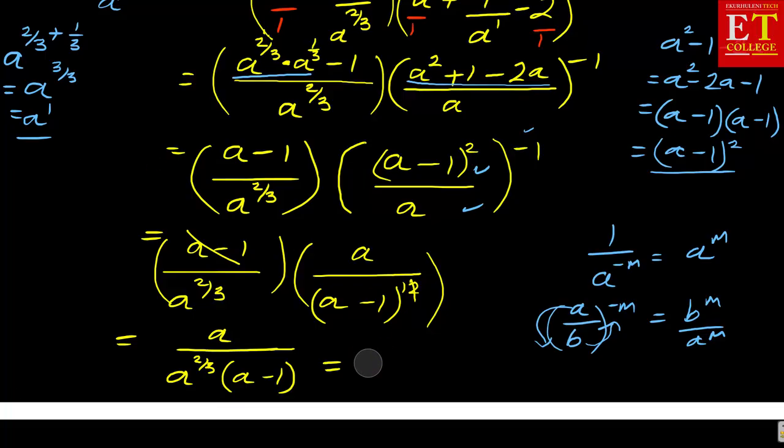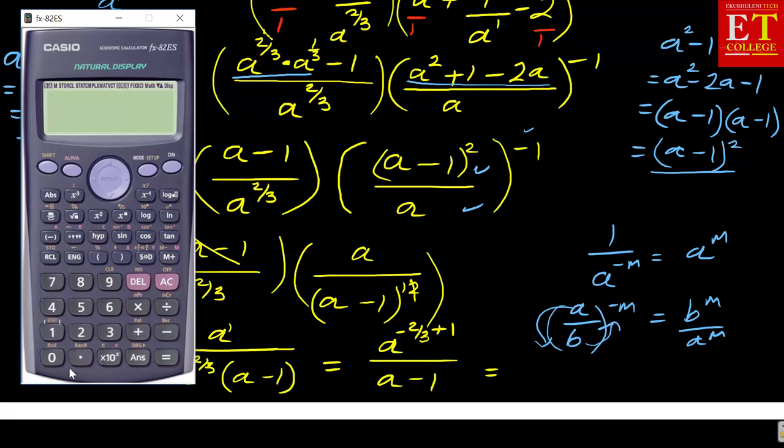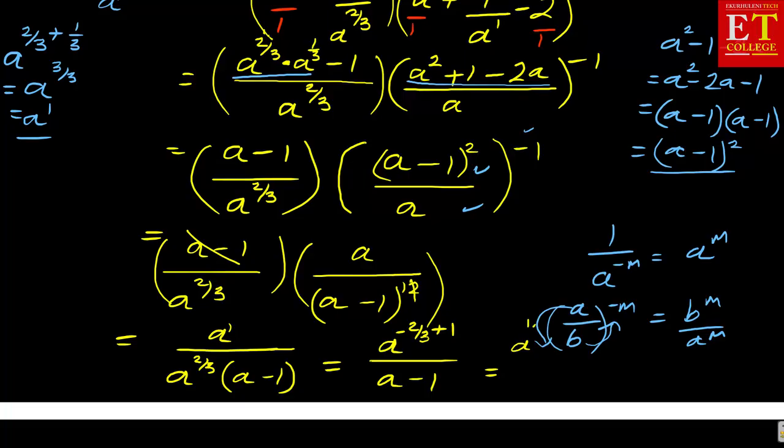If I take it on top, it will become a to the power negative 2 over 3 times a to the power 1 all over a minus 1. This will become minus 2 over 3 plus 1, which is 1 over 3. So finally we have a to the power 1 over 3 all over a minus 1. This becomes the solution to that particular problem.